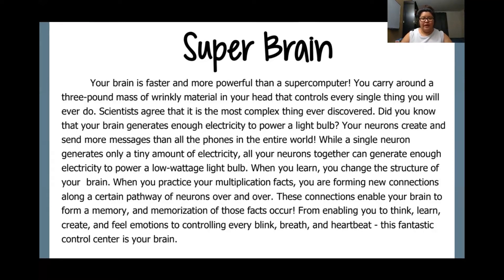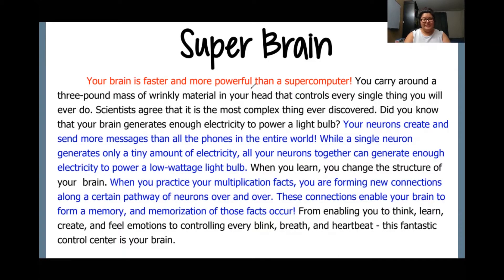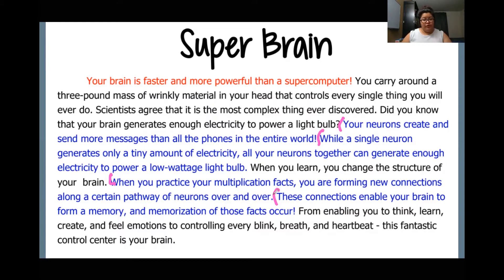Here are our answers. In red is our main idea, and in blue those sentences are our supporting details. Our main idea: your brain is faster and more powerful than a supercomputer. And our supporting details — we have one, two, three, and four. Those four things are our supporting details that tell us that our brain is faster and more powerful than a supercomputer.